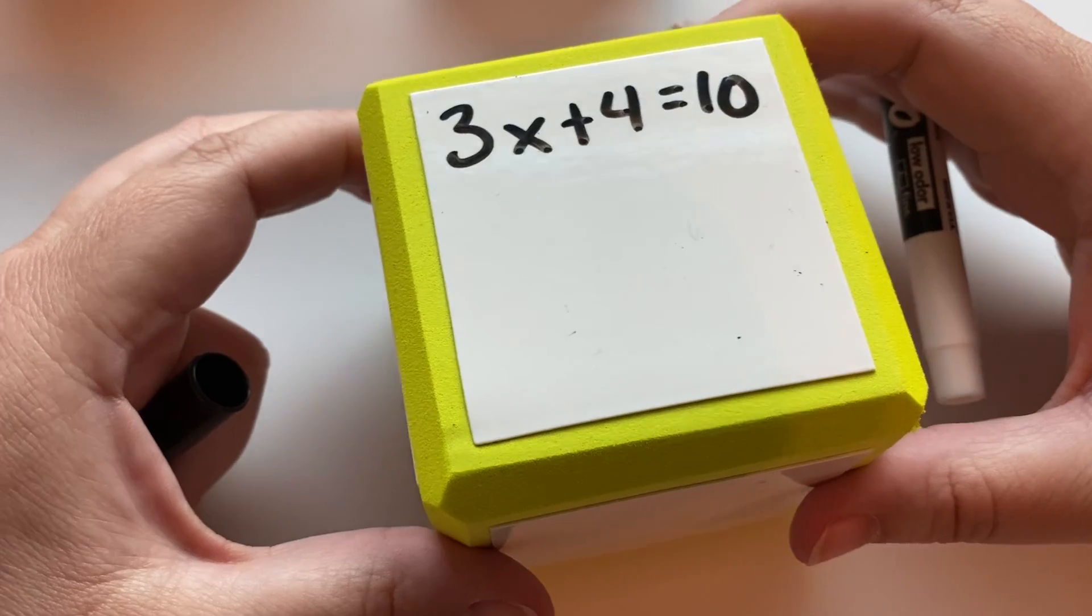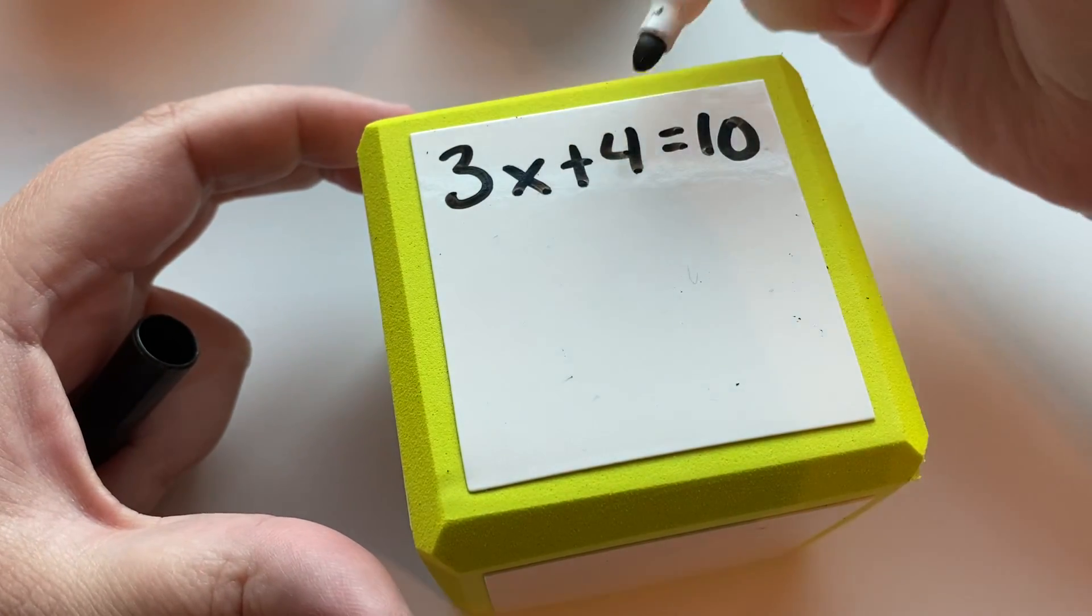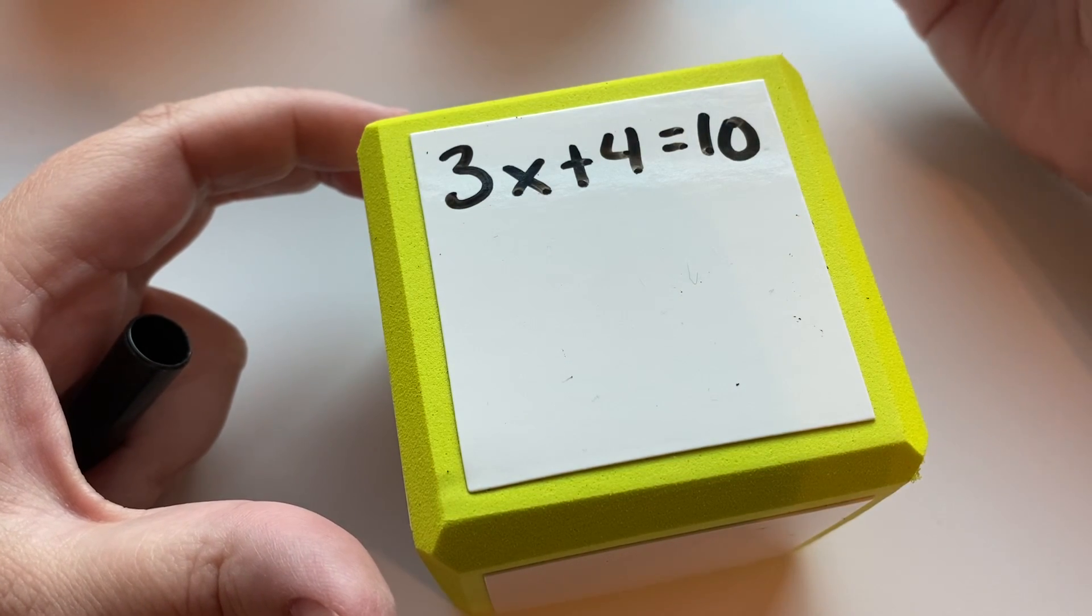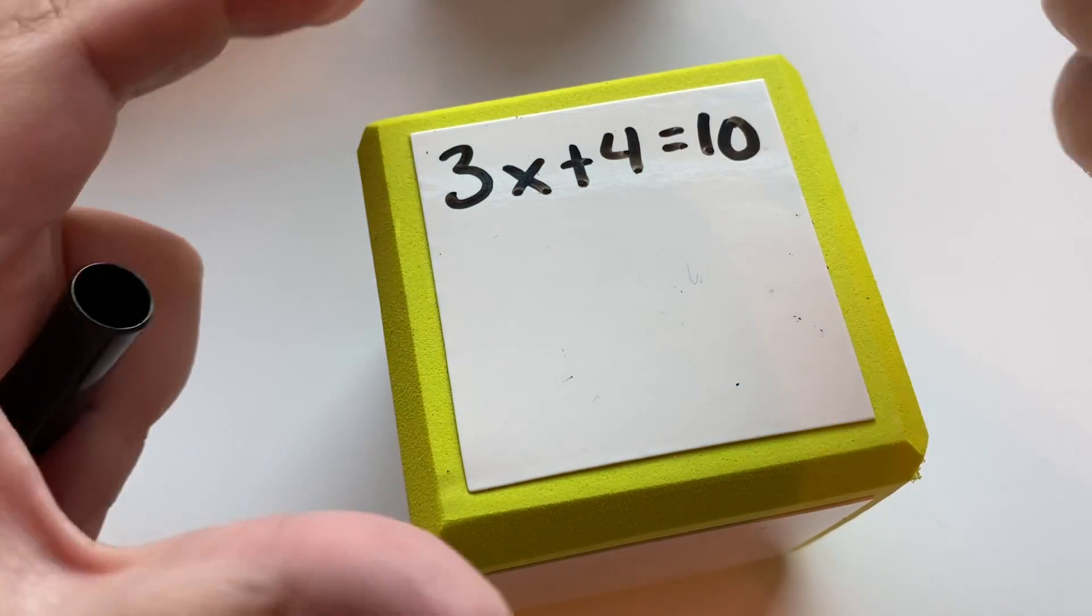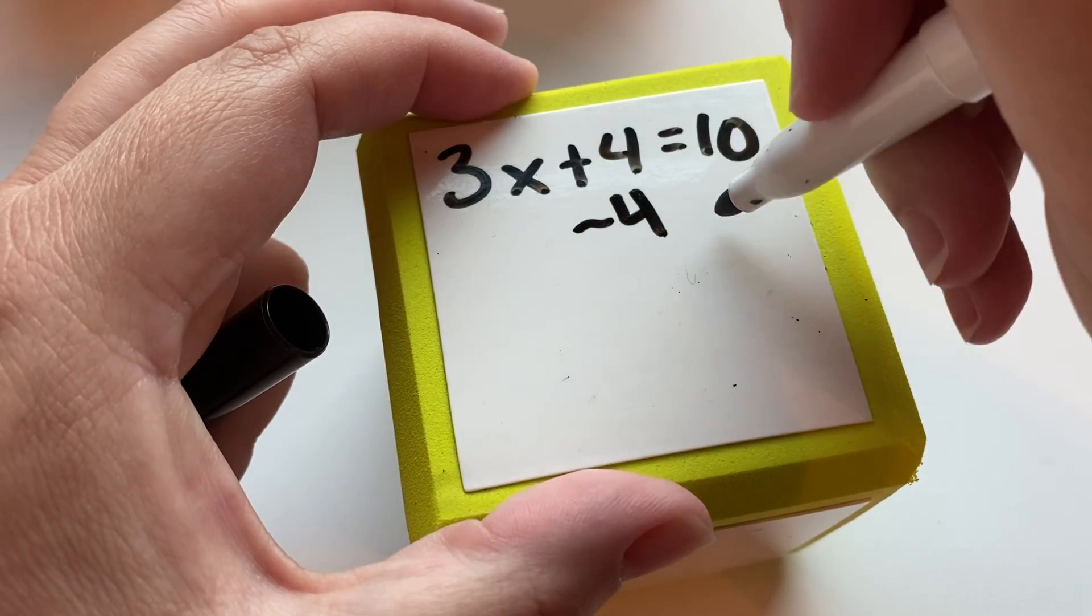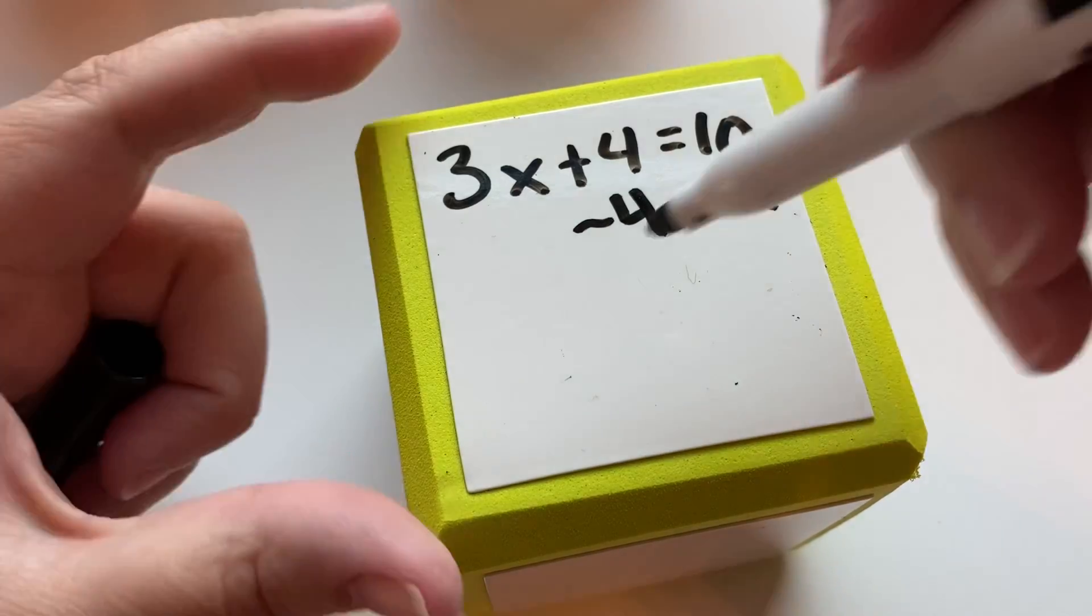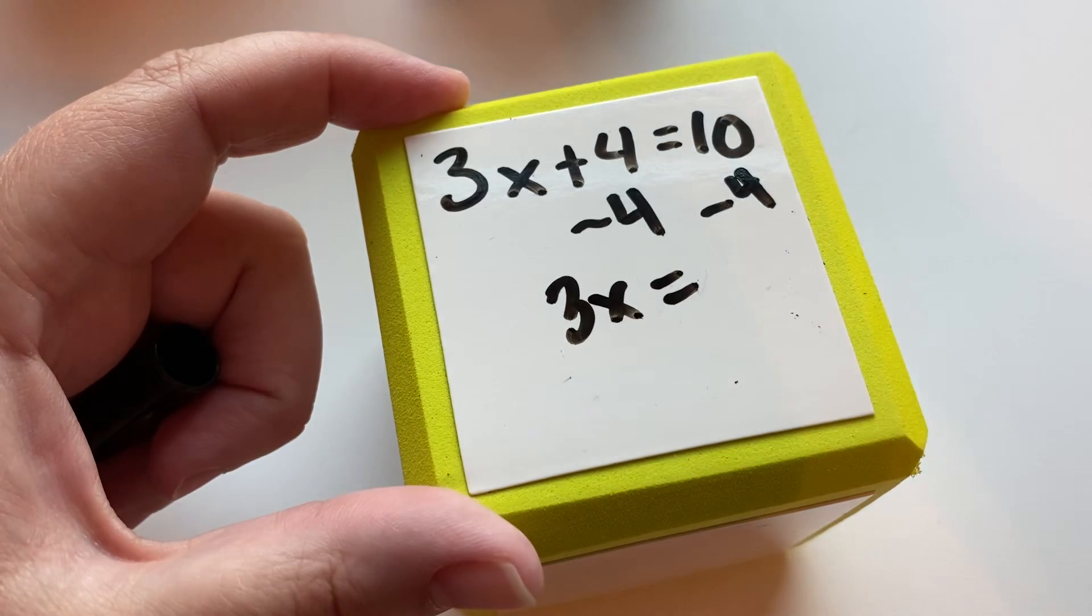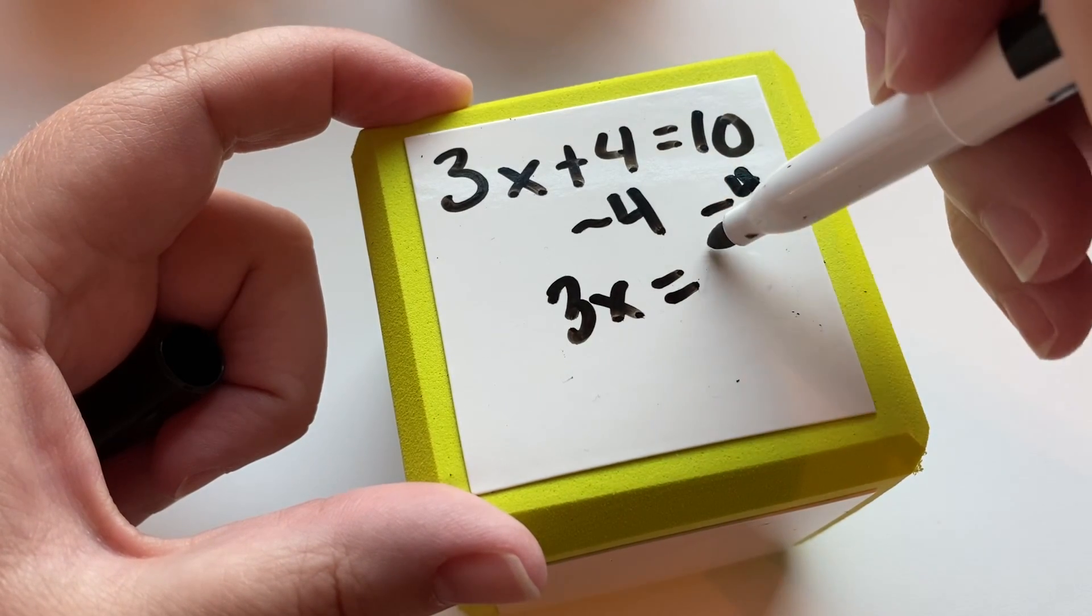3x plus 4 equals 10. The 3x is our multiplication and the plus 4 is our addition. We're going to start with the addition, and we're going to use the inverse operation—the opposite operation—and we're going to do it to both sides. So this will be minus 4 and minus 4. We're left over here with 3x because 4 minus 4 is 0.